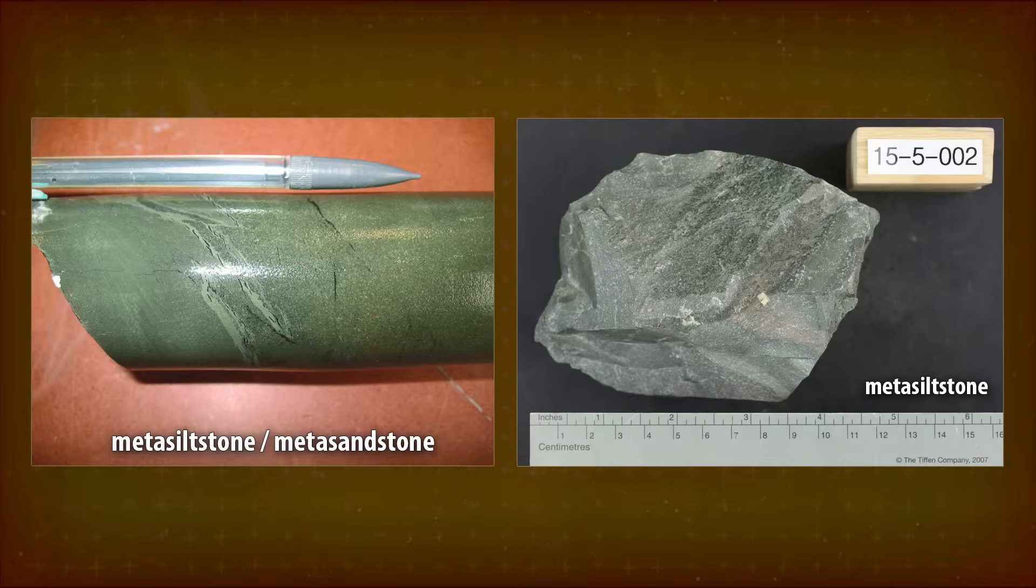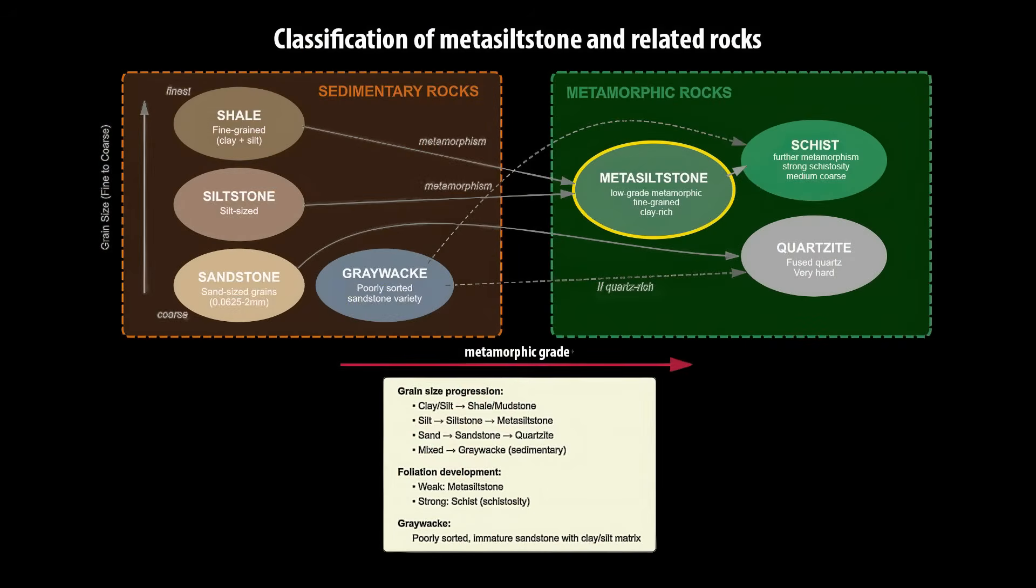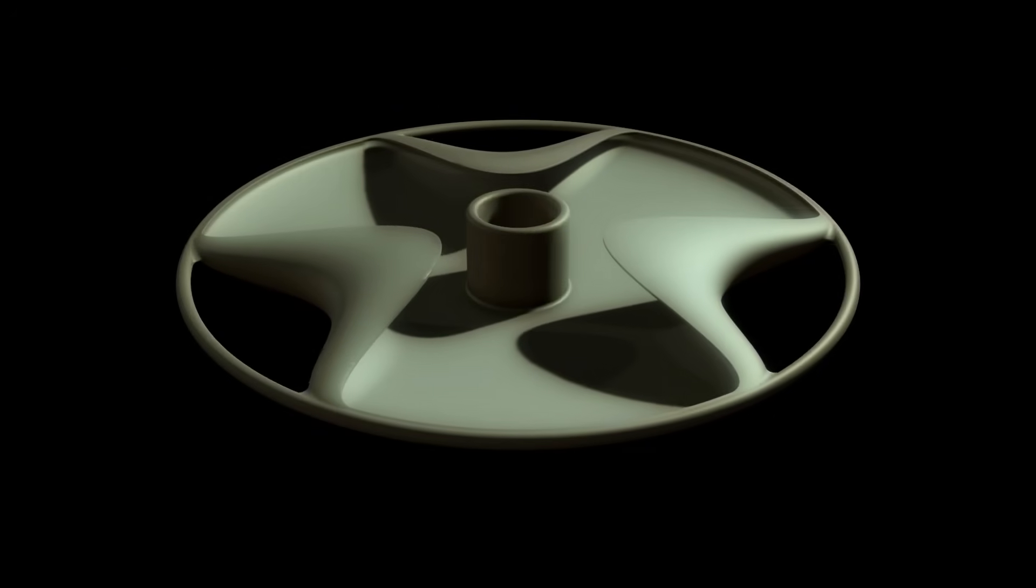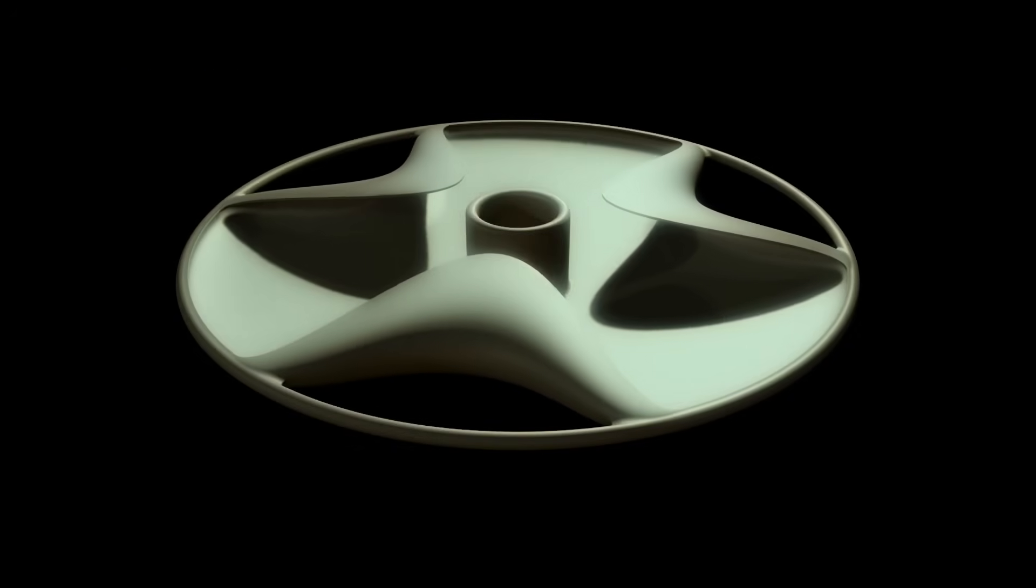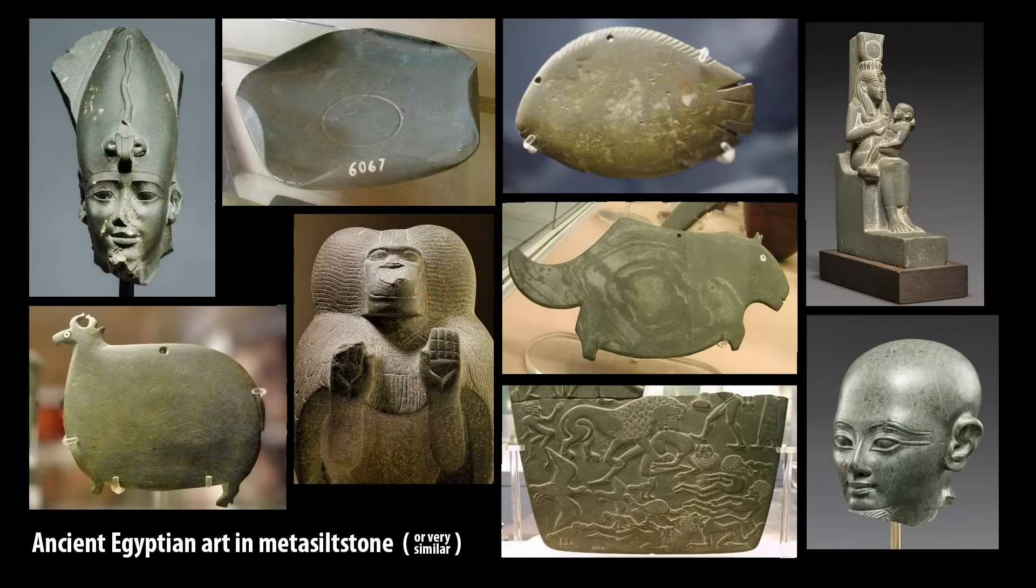Some varieties of metasiltstone are slightly greenish, like the Sabu disk. Metasiltstone is denser and more cohesive than schist, and it can be shaped into thin edges without delaminating. This means that even though the carving of the disk was certainly difficult, metasiltstone does actually allow for unusual shaping. This is why Egyptians used metasiltstone in other art pieces.